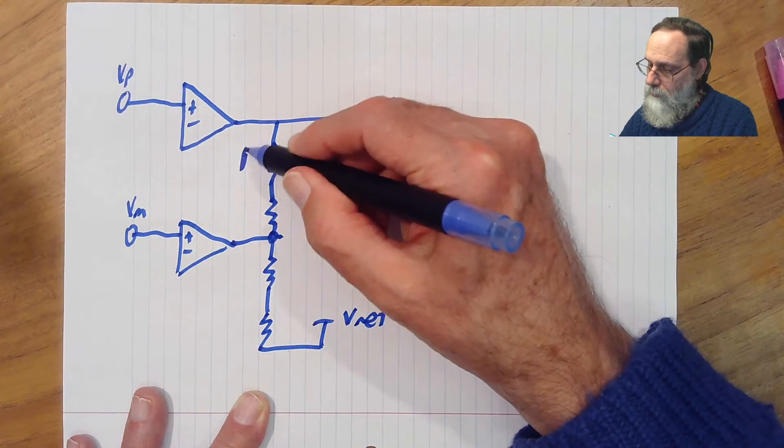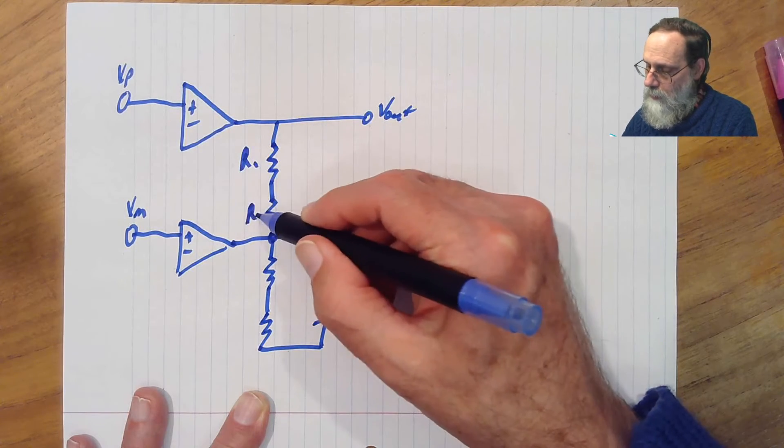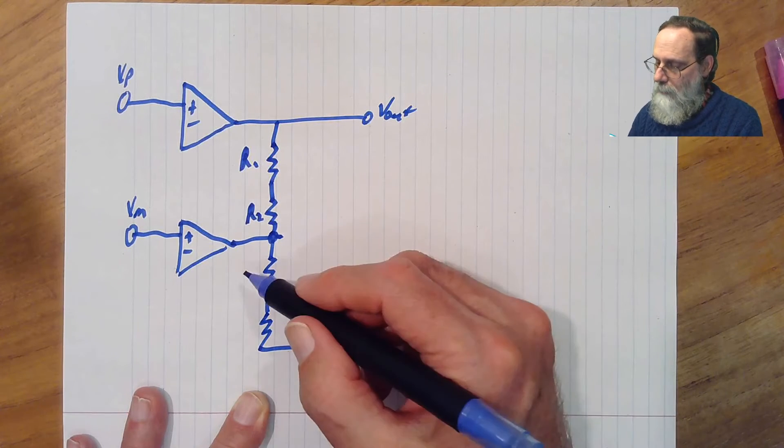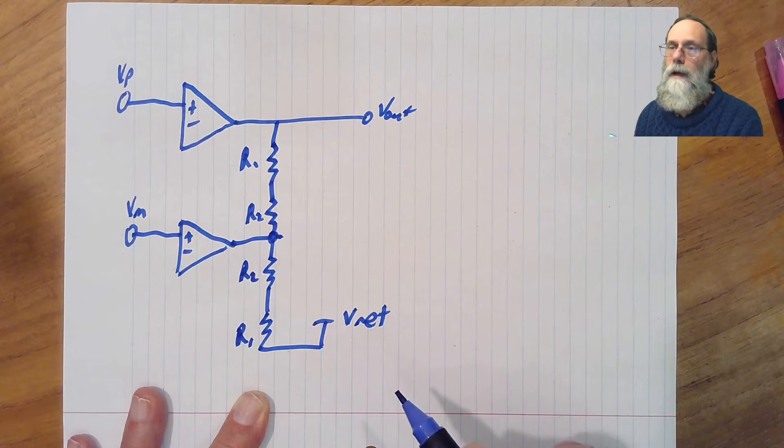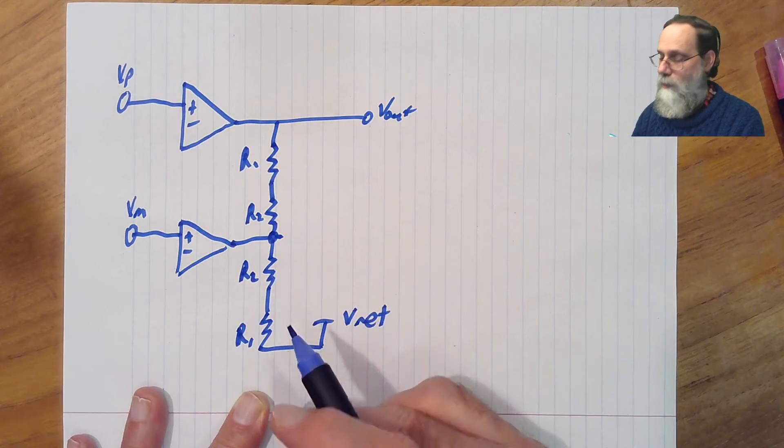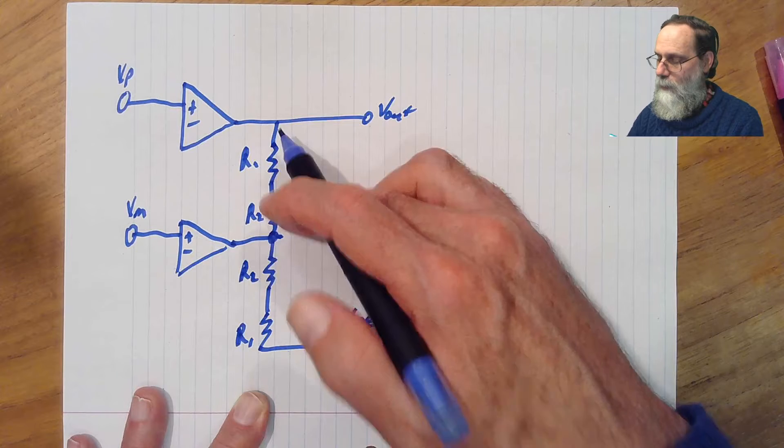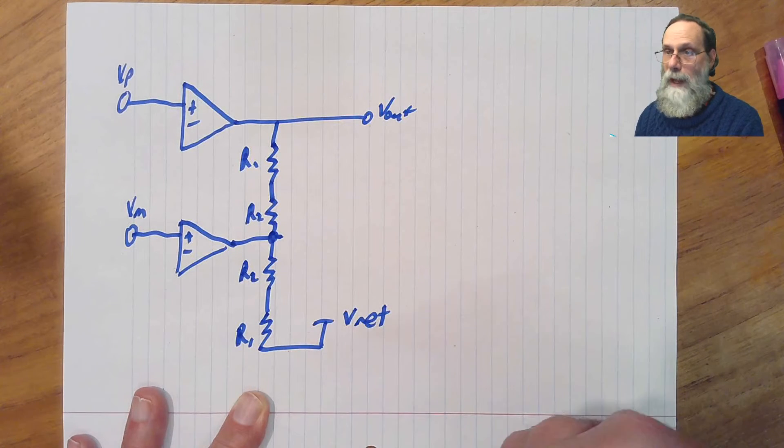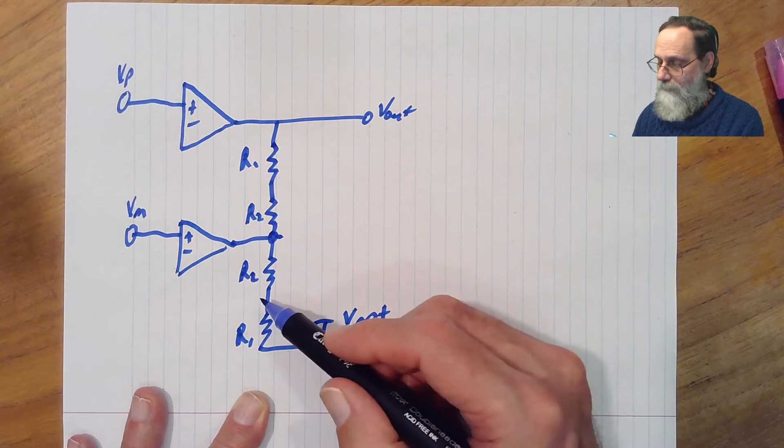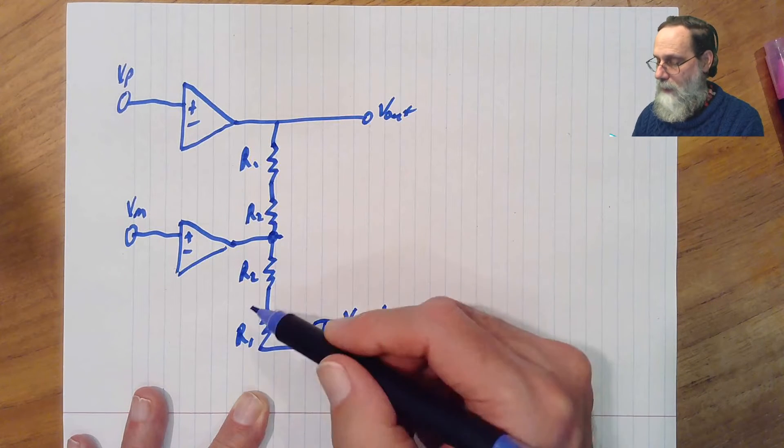Let's call this resistor R1, this one R2, and then we'll come back out R2, R1 for the other pair here. It isn't essential that these two R2s be the same and these R1s be the same, but they usually are, because it's easier to match things than to make multiples that are not exact matches.